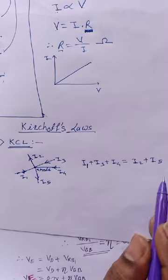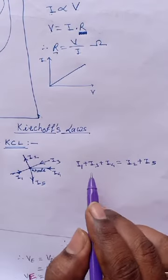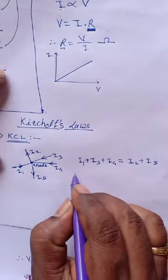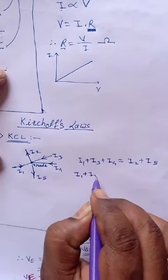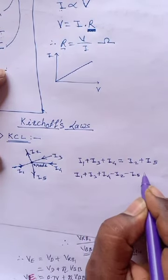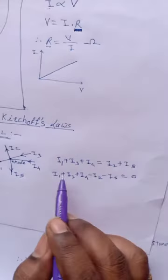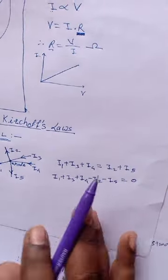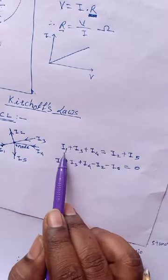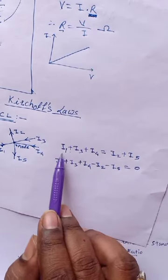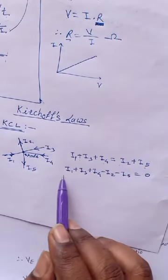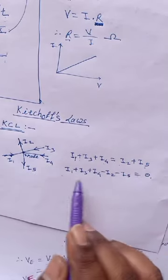The modified equation states that the algebraic sum of the currents at any node is equal to zero. So I1 plus I3 plus I4 minus I2 minus I5 equals zero. The sum of currents entering the node equals the sum of currents leaving the node, and the algebraic sum of currents at any common node equals zero.